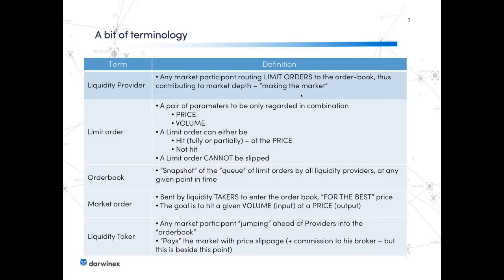You're probably asking yourself, what is a limit order? A limit order is an order specifying two parameters that can only be regarded in combination: the price at which we're willing to trade, and how much volume we're willing to trade at that price. Because both can't be split from each other, a limit order can either be hit fully, partially, or not hit. But if it is hit, it will only be hit at its price — it cannot be slipped.